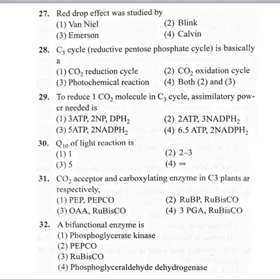Red drop effect: scientist Robert Emerson and his team performed an experiment in Chlorella. When plants are exposed to red light — up to 653 to 680 nanometers — the rate of photosynthesis suddenly decreases after 680 nanometers. This is called the red drop effect: the rate of photosynthesis is suddenly declined after 680 nanometers. So, red drop effect was studied by Emerson.